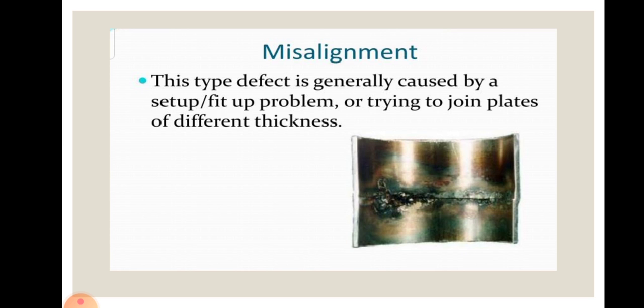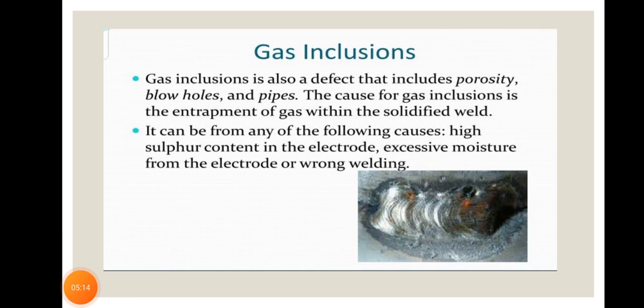Next welding defect is gas inclusion. Gas inclusion is a defect that includes porosity, blowholes, and pipes. The cause for gas inclusion is the entrapment of gas within the solidified melt. When gases like hydrogen, carbon monoxide, and nitrogen are present in the molten metal pool, they can be absorbed and produce blowholes and other gas inclusion defects.